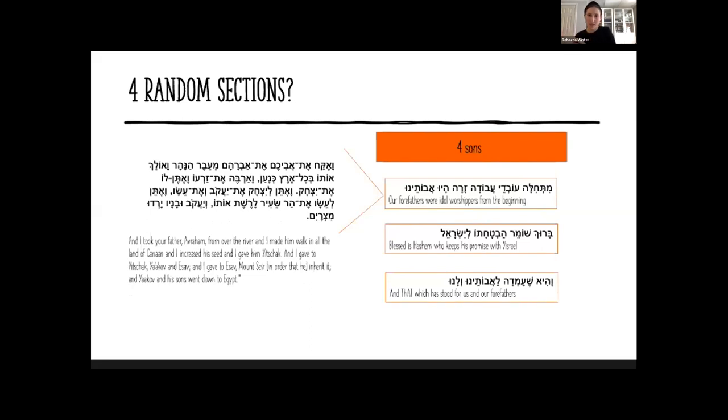It says: 'Mitchila ovdei avodah zarah hayu avoteinu' - our forefathers were idol worshipers, and now Hashem has brought us to serving Him. It quotes this verse from Sefer Yehoshua, going through the history of B'nei Yisrael before they got to Mitzrayim, starting all the way back with Avraham's father Terach, who was the father of both Avraham and Nachor, who served other gods. It says Yehoshua, through Hashem, 'I took Avraham from the other side of the river and I brought him to Eretz Canaan and I multiplied his seed through Yitzchak.' V'Eten l'Yitzchak et Yaakov v'et Esav - I gave Yitzchak two sons, Yaakov and Esav. I gave Esav Har Seir. V'Yaakov uvanav yardu Mitzrayim - and then Yaakov and his sons went down to Egypt.